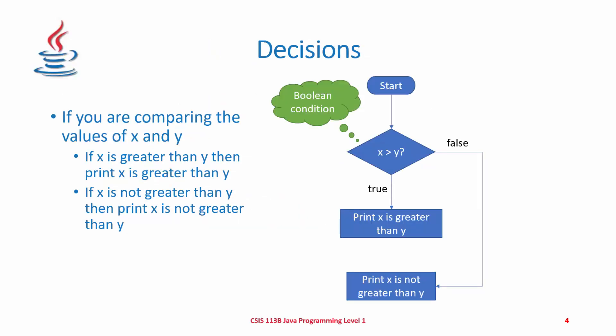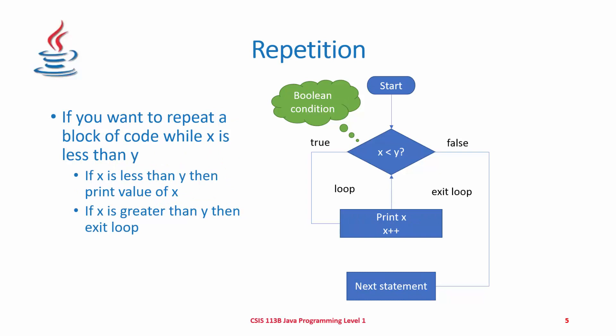Here is an example of a decision: we're comparing the values of X and Y to see if X is greater than Y. If X is greater than Y, we print 'X is greater than Y.' If it's not, we print 'X is not greater than Y.' So we have a true path and a false path. Whereas in repetition, we want to repeat a block of code — in this case, while X is less than Y, we print the value of X. When X becomes greater than Y, we exit the loop.